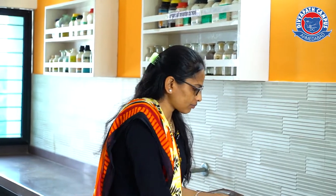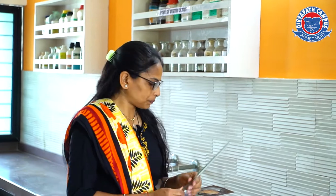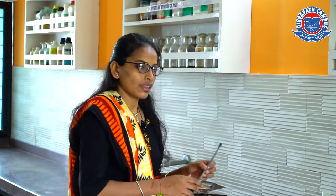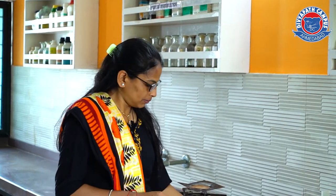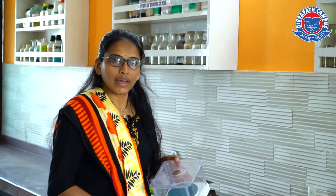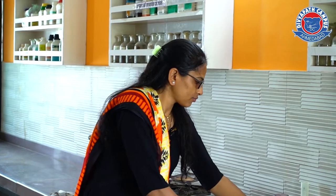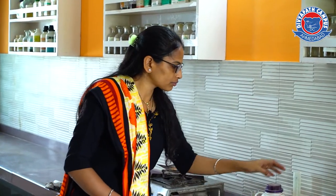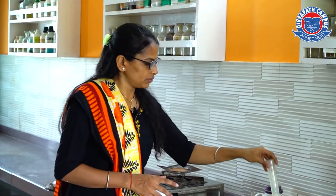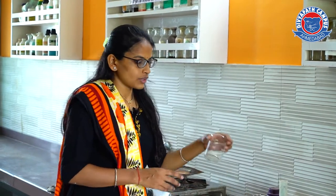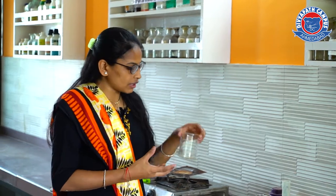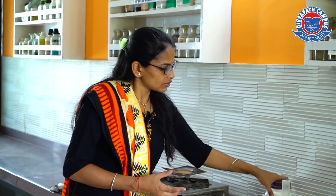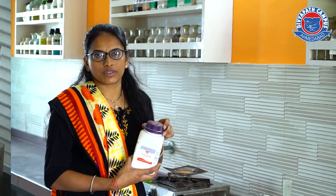10 ml pipette, glass rod, spatula, watch glass, weighing balance, distilled water, 100 ml measuring cylinder, 250 ml beaker, and starch powder. First of all, we have to boil the water.